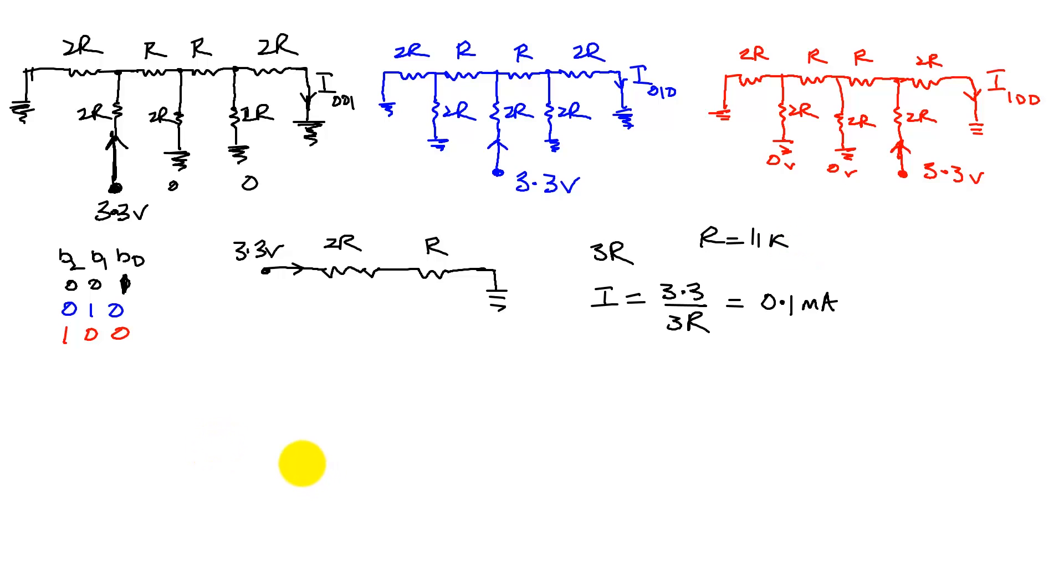So now what we notice then is when we look at each of these values and we find out what the current is, which is, this is I01, which is, in our case, the current.